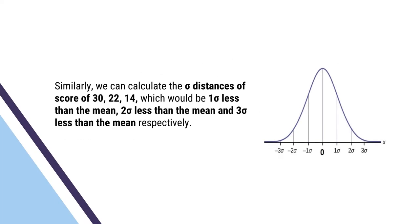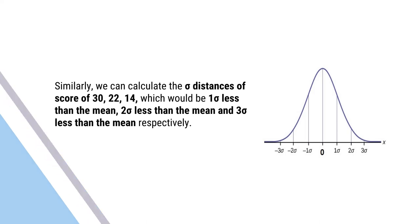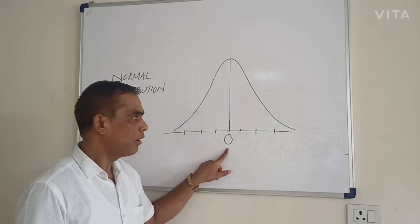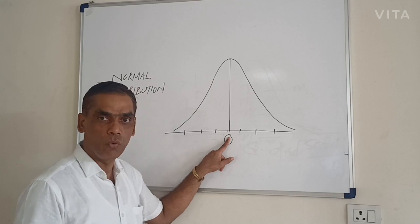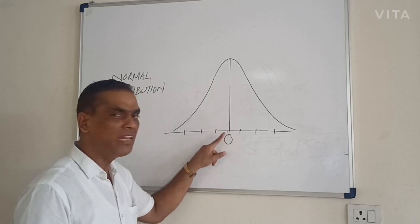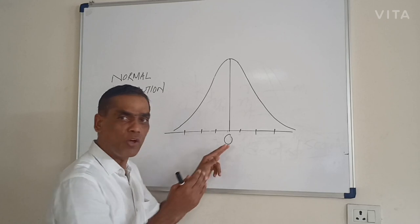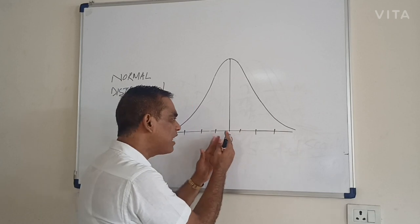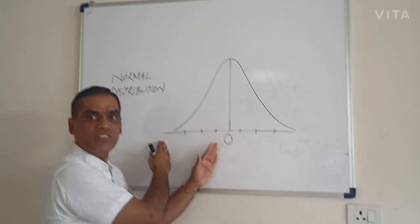Similarly, we can calculate the sigma distance for scores of 30, 22, and 14, which would be 1 sigma less than the mean, 2 sigma less than the mean, and 3 sigma less than the mean respectively. Remember, the sigma distance of the mean is always 0, as the mean coincides at point O. If the score is more than the mean, it will be on the right side of the mean. If the score is less than the mean, it will be on the left side of the mean.